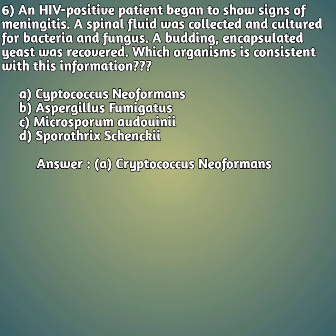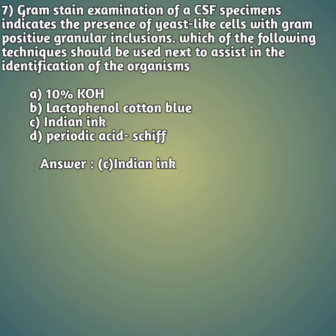Seventh question: gram stain examination of a CSF specimen indicates the presence of yeast-like cells with gram-positive granular inclusions. Which technique should be used next to assist in identification? Option A: 10% KOH (potassium hydroxide); option B: lactophenol cotton blue; option C: Indian ink; option D: periodic acid-Schiff. The right answer is option C, Indian ink.